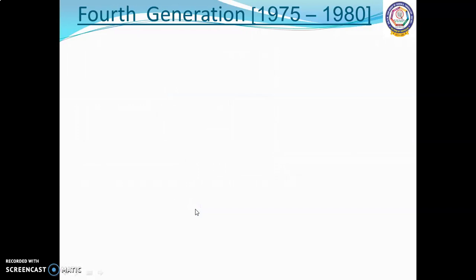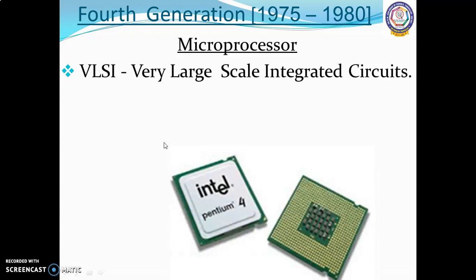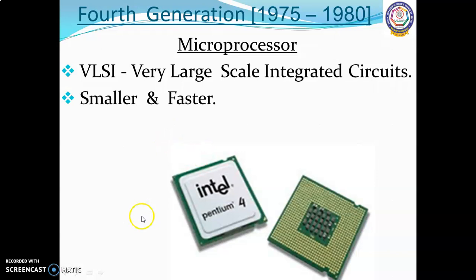Fourth generation, 1975 to 1980, used microprocessors and very large-scale integrated circuits. Computers became smaller and faster. Microcomputer series such as IBM and Apple were further developed, and portable computers were introduced.